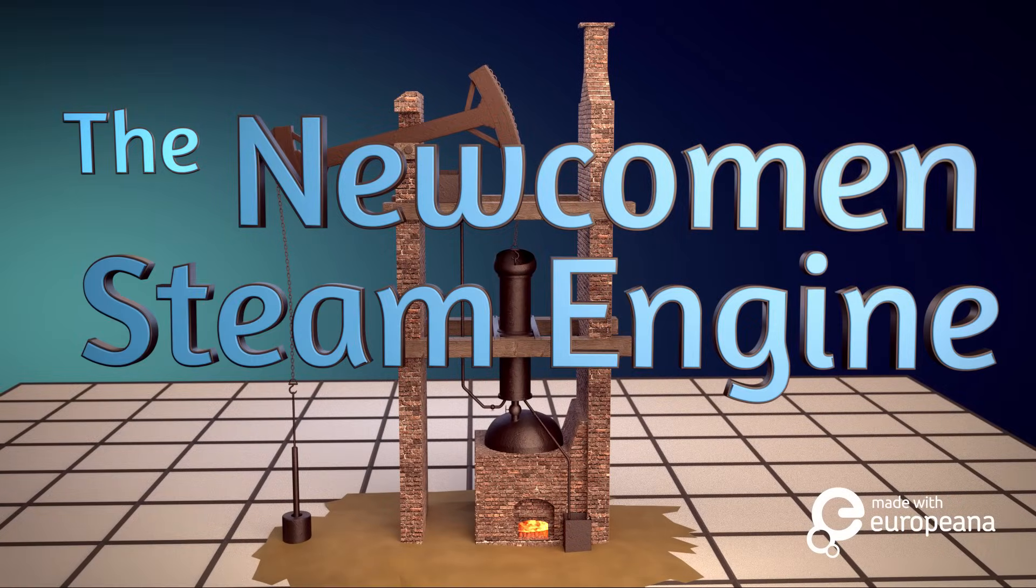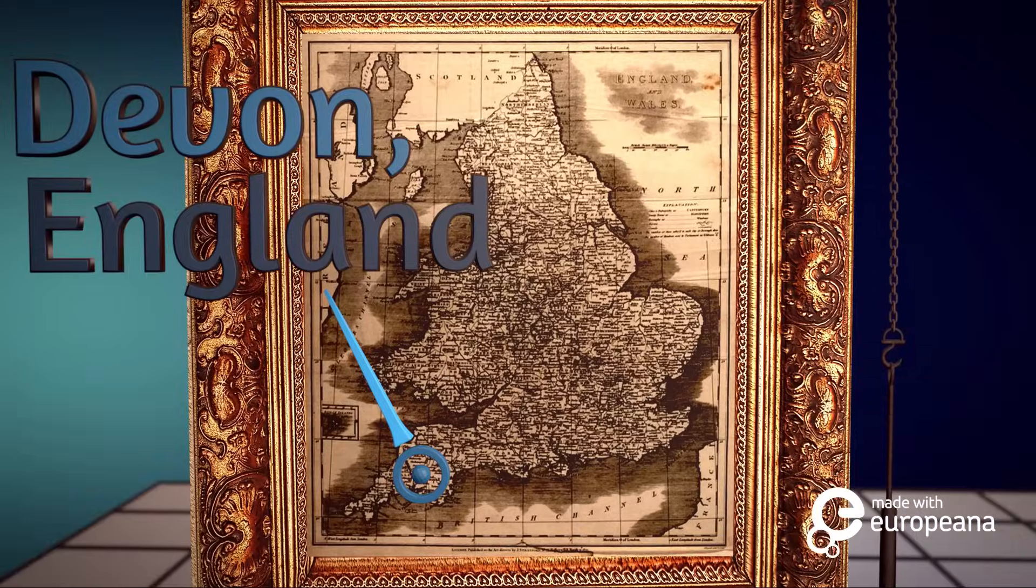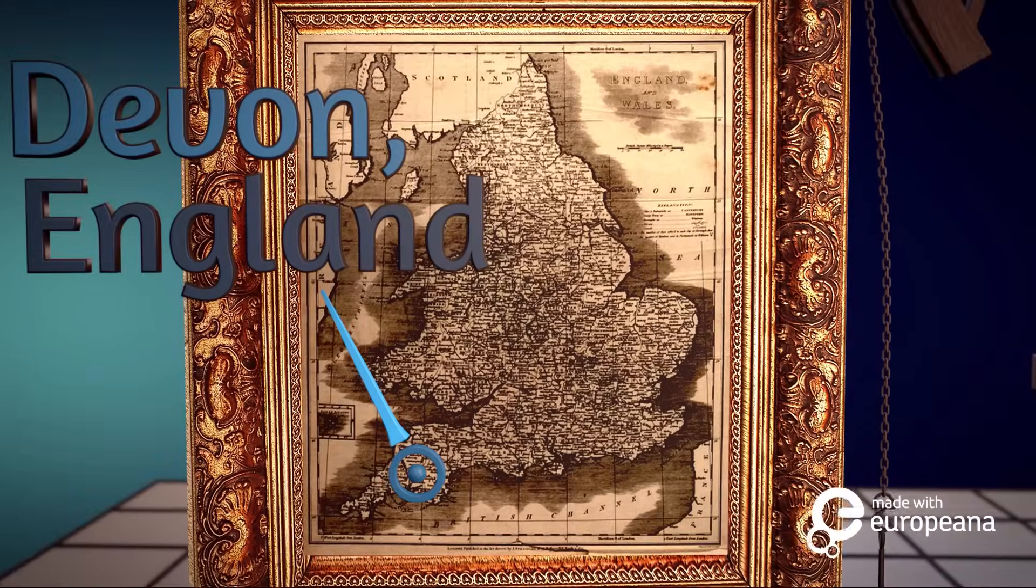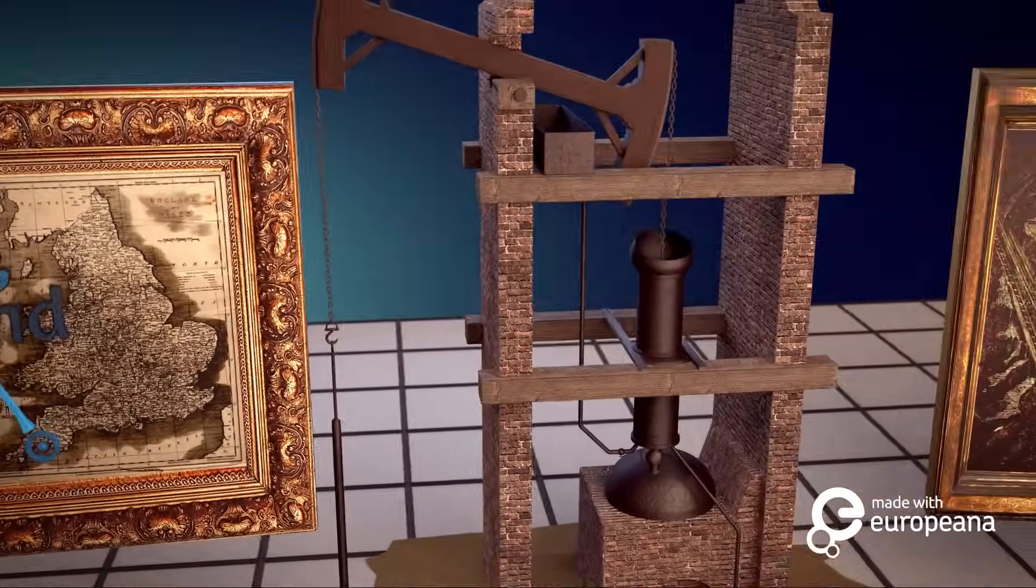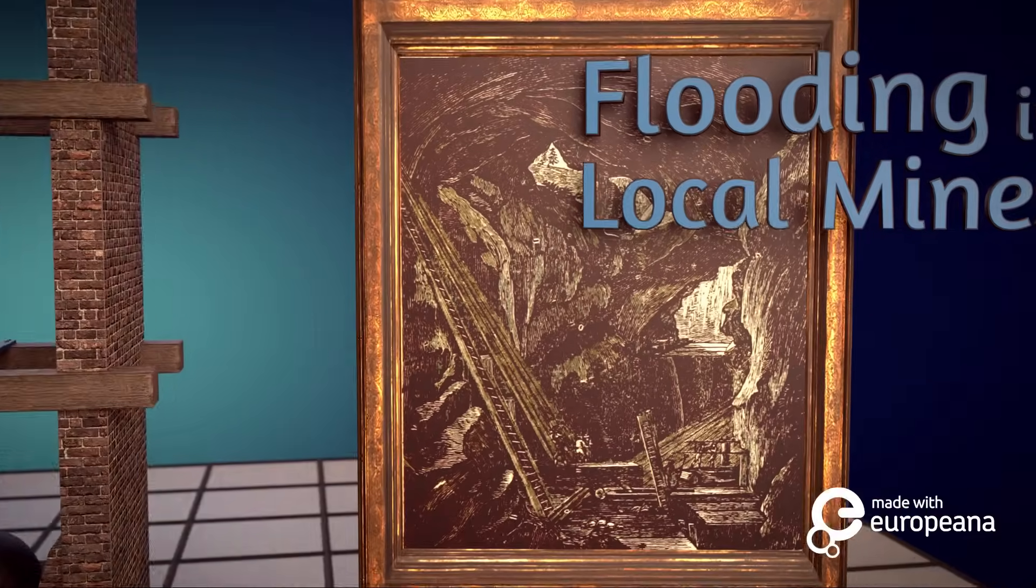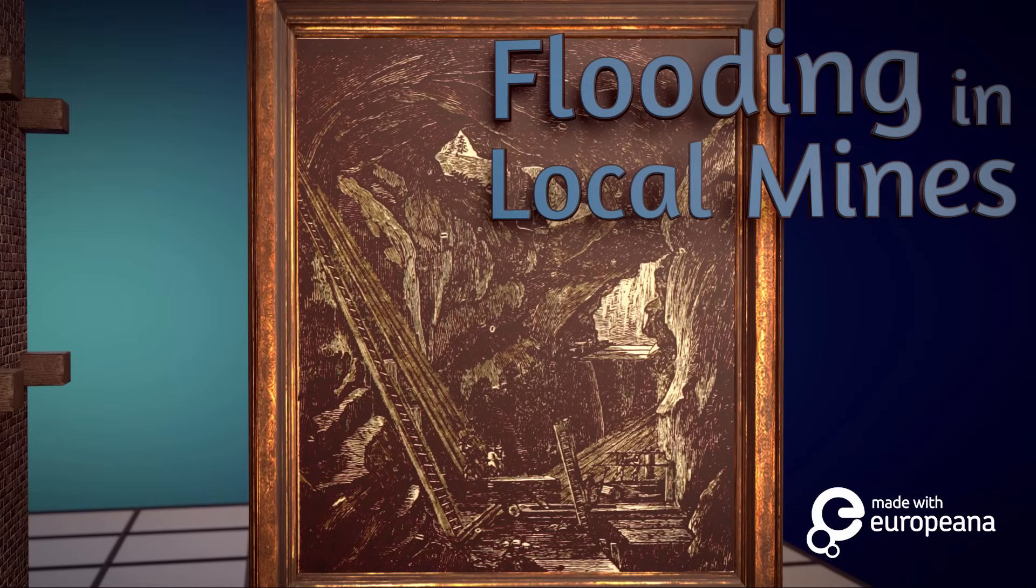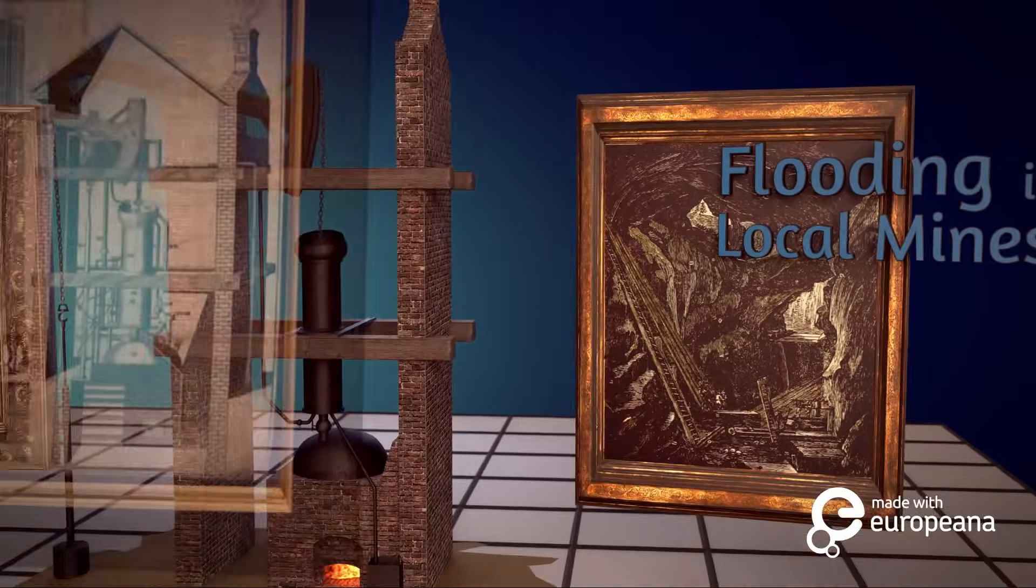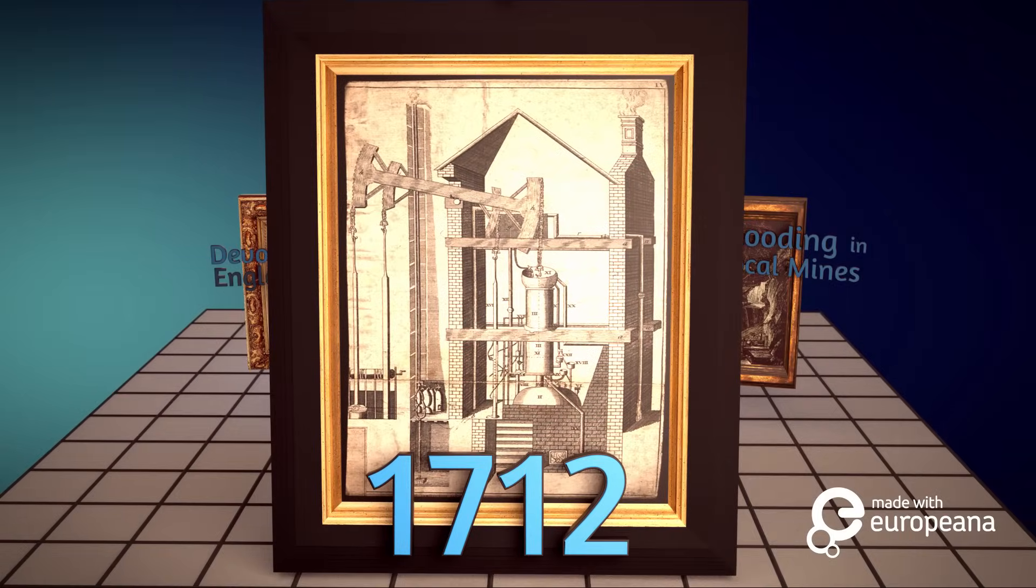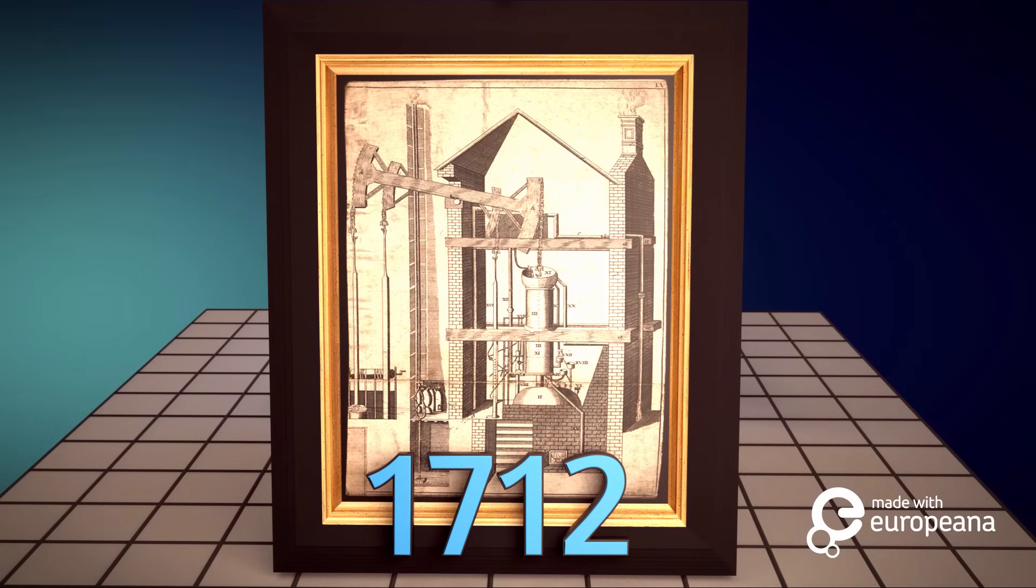Thomas Newcomen, born in Devon, England in 1664, was an ironmonger and a preacher who was determined to find a way to solve the problem of flooding in the local mines. It turns out, the Newcomen steam engine is not only the direct ancestor of modern engines, but its invention in 1712 helped set the stage for the machines that powered the industrial revolution.